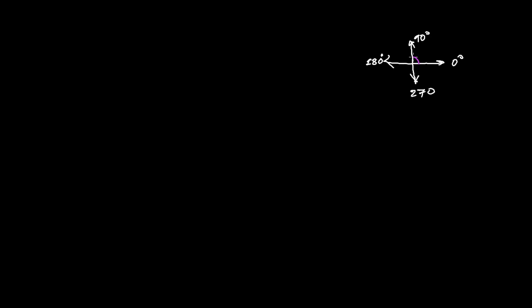Let me remind you once again: on the coordinate axis, this represents 0°, this represents 90°, this represents 180°, and this represents 270°. When we make one complete cycle, 0° becomes 360°, and then another cycle repeats — it becomes 720° — and it goes on like this.